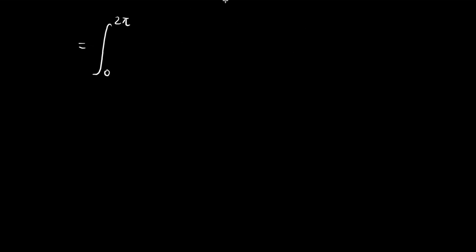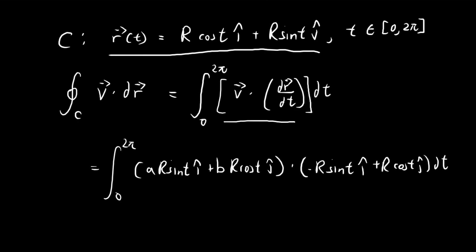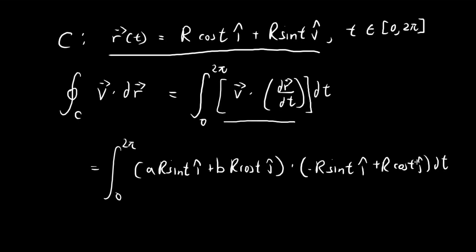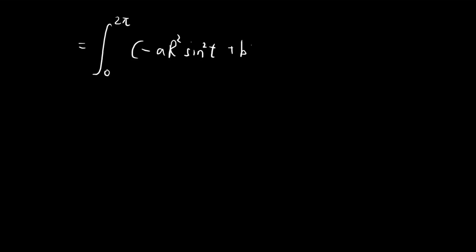In the end, our integrand is going to look pretty nice, pretty easy to evaluate. We have negative ar² sine²t for the i term, and for the j term, we have br² cosine²t. This should be pretty easy to evaluate.